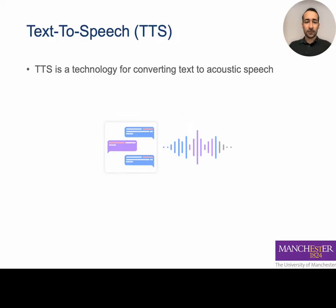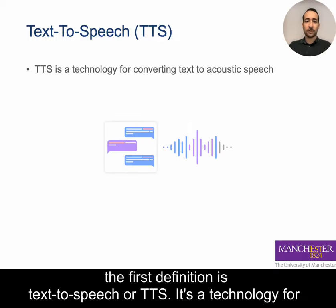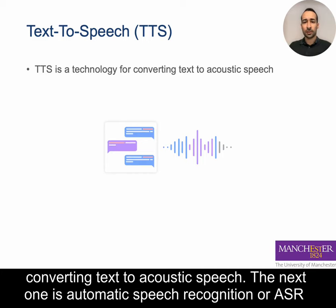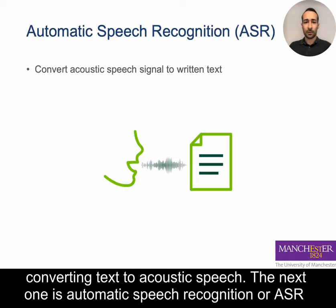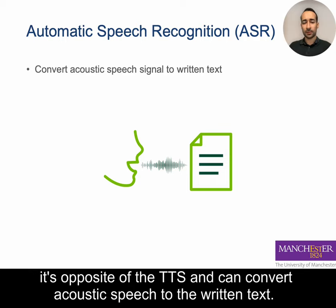The first definition is text-to-speech, or TTS — it's a technology for converting text to acoustic speech. The next one is automatic speech recognition, or ASR — it is the opposite of TTS and can convert acoustic speech to written text.